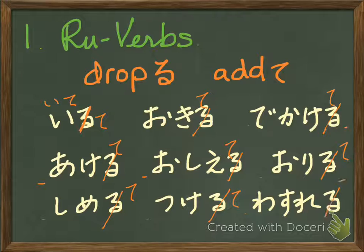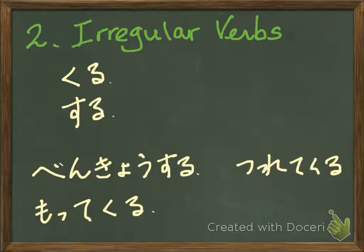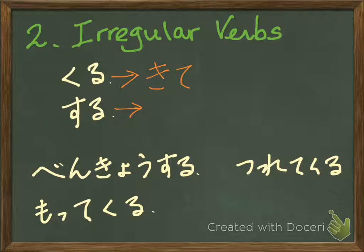Wasureru → wasurete. Irregular verbs — basically, irregular verbs are kuru and suru. You need to memorize the conjugation pattern. Kuru is kite — not kute, it's kite. It's irregular. Suru is shite. So, kuru (to come) is kite, and suru (to do) is shite.